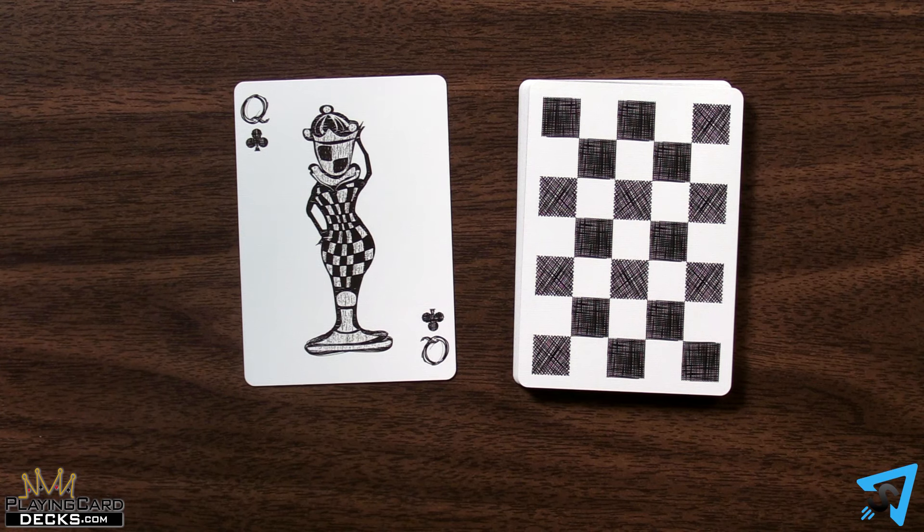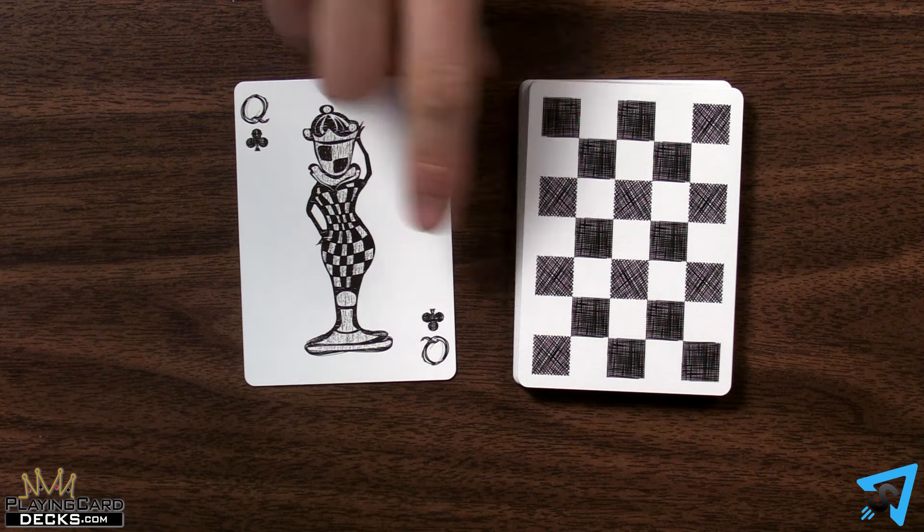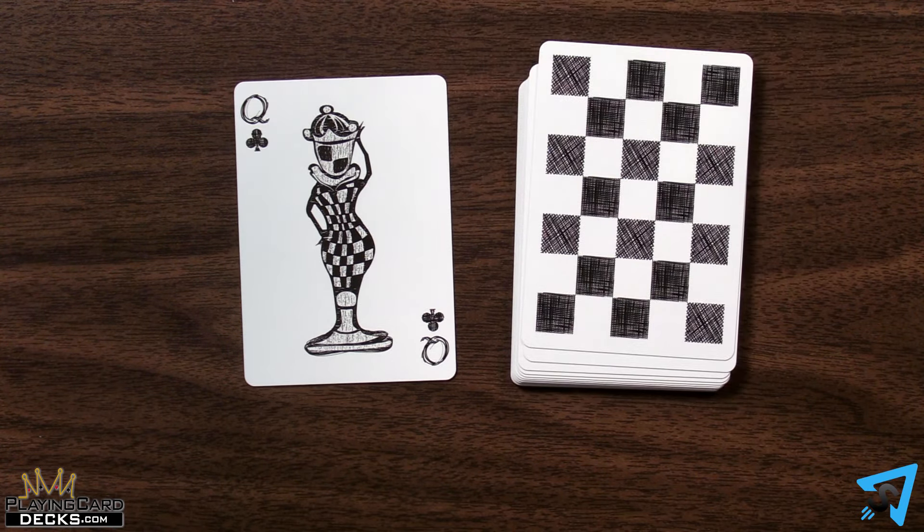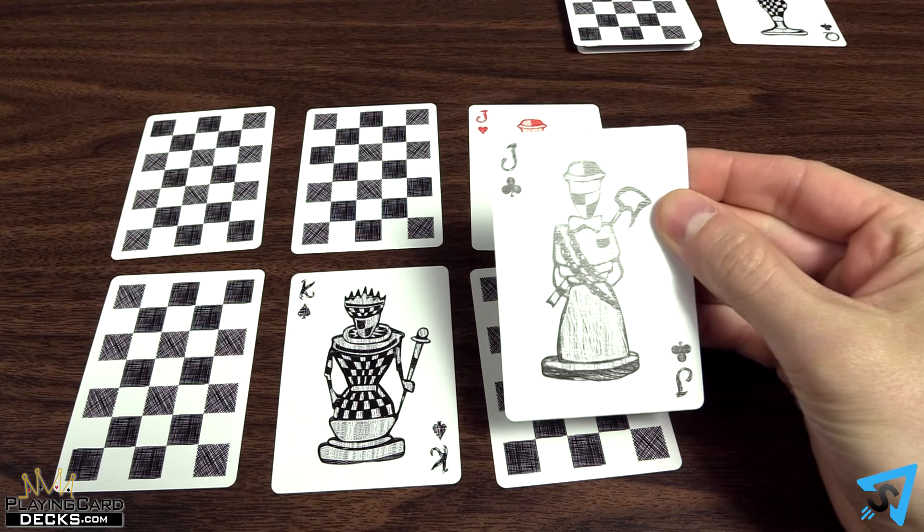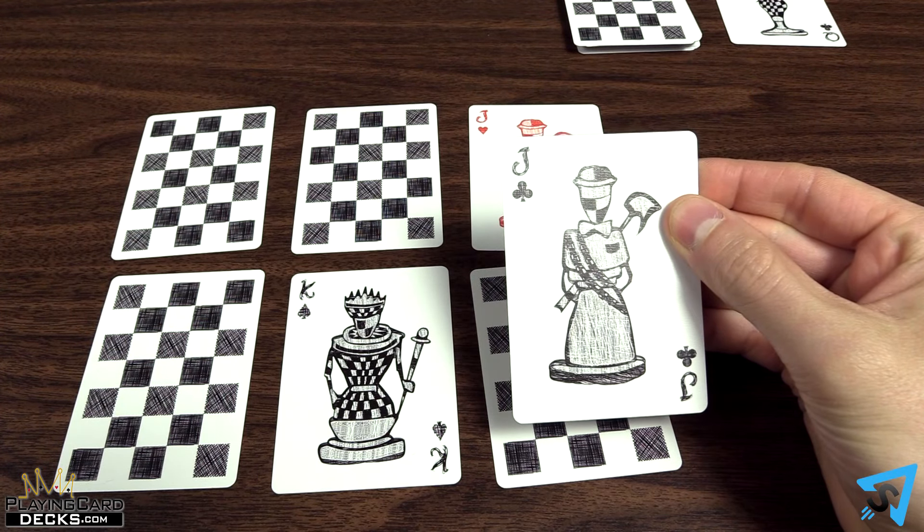The player to the left of the dealer goes first, then play proceeds clockwise. On your turn, you must either draw the top card of the stock or discard pile. You may use the card you drew to replace any one of the 6 cards in your grid.